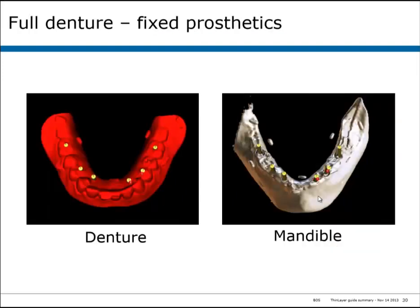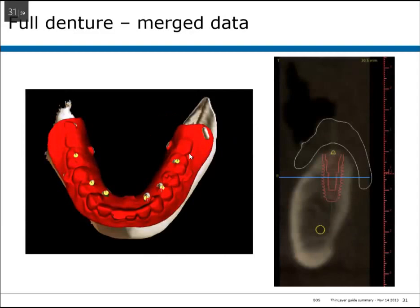In the next case, the dual scan method was used, where fiducial markers were placed on a denture. The patient was scanned wearing the denture, and then the denture alone was scanned. The two data sets were merged so that in the cross-sectional view, you get the alveolus and an outline of the denture. You can see the occlusal surface of the denture tooth, and the position of the implant in the center of that molar — the center line of the implant coming right up through the molar — achieving ideal implant placement.